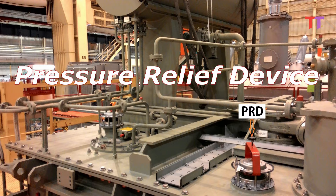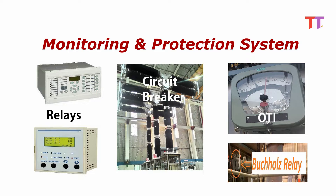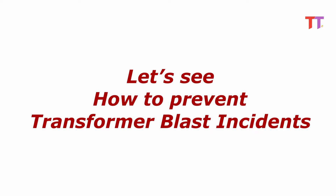As the name says, the pressure relief device provides a passageway for oil to release the pressure developed inside the transformer. Hence, with these monitoring and protection systems, it becomes very easy to identify in advance and prevent transformer blast incidents. Now let's see how to prevent transformer blast incidents.